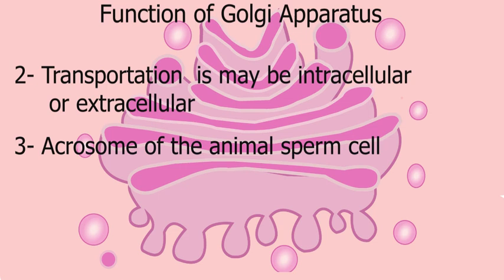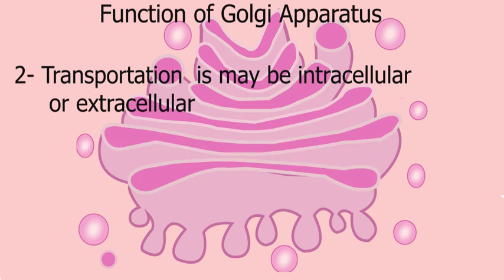The acrosome of the animal sperm cell is synthesized by Golgi apparatus. Golgi apparatus also helps in the formation of lysosomes and peroxisomes.